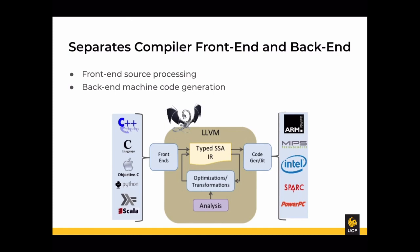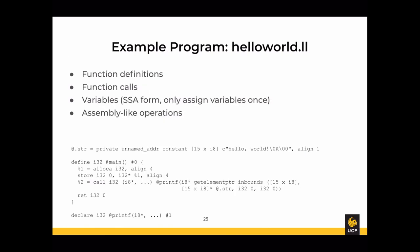For our project, we're writing a new front end for LLVM and we get all the machine code generation for free by using LLVM. Let's look at an example LLVM IR program. LLVM provides function definitions, function calls, variables in Static Single Assignment (SSA) form — meaning variables can only be assigned once — and a whole set of assembly-like operations or instructions.